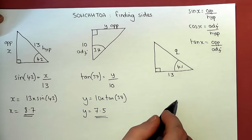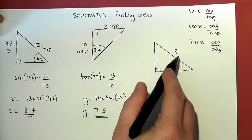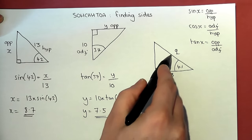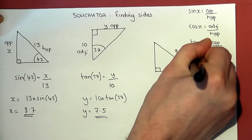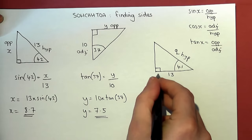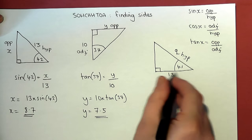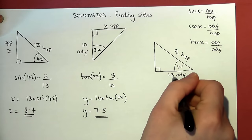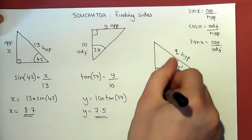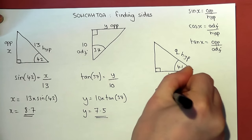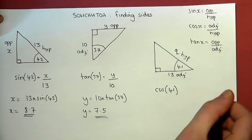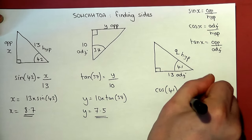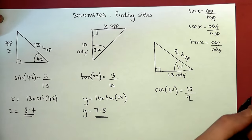Now the third one. The unknown is opposite the right angle — that is the hypotenuse. This side here is next to the angle, so it is the adjacent. Adjacent and hypotenuse means we use cos. So cos of the angle, which is 41 in this case, is equal to the adjacent 13 over q, which is the hypotenuse.